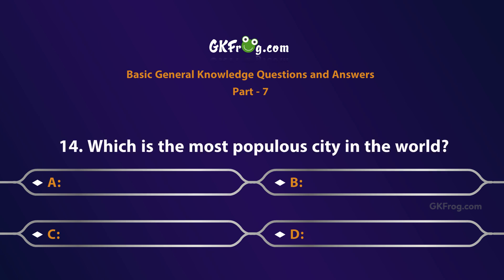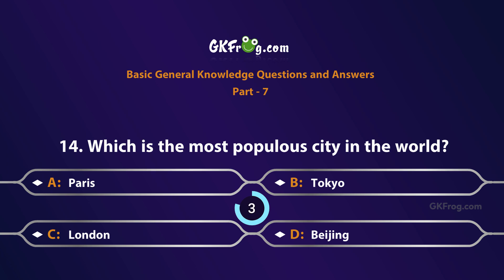Which is the most populous city in the world? A. Paris, B. Tokyo, C. London, D. Beijing. Correct answer is B. Tokyo.